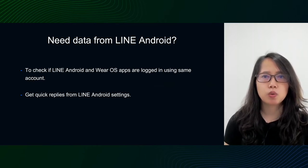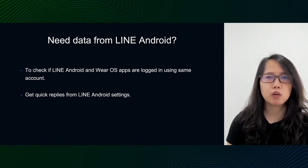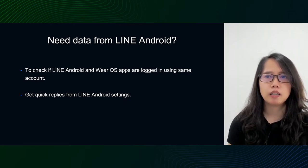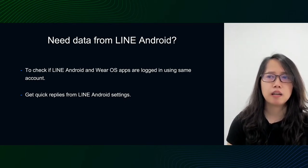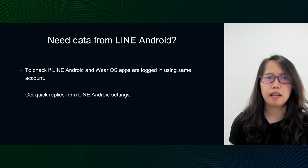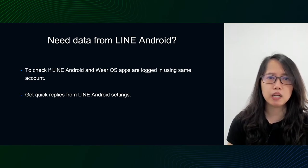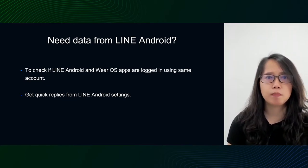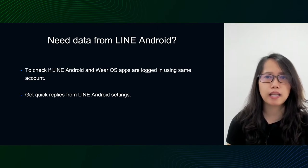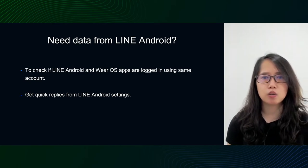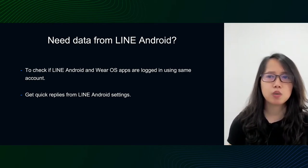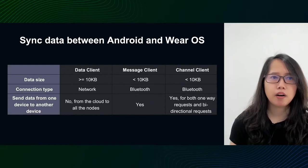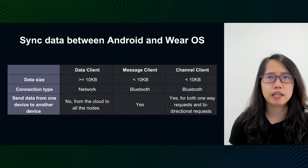In our Live WearOS app, there are two kinds of data we need to get from the Live Android app. The first is the user ID, to check whether the user is logged into the same account on Live Android and WearOS. The second is the quick reply list — a list of text messages from settings on Live Android. This data should be sent to Live WearOS whenever it changes — for example, the user ID after login on the phone, or the quick reply list after the user changes it in settings.